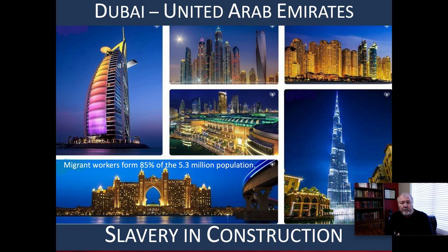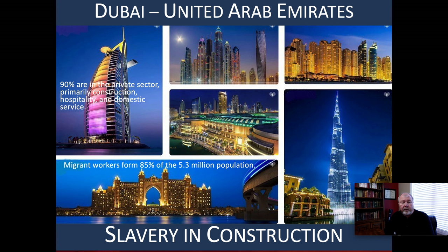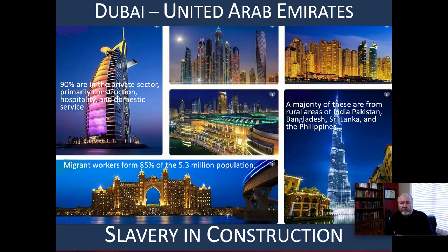90% are in the private sector — that is, they're working in construction, in hospitality, and in domestic service. Each area has its own primary demographic. Construction workers are primarily from India. In hospitality or domestic service, oftentimes you're looking at those from the Philippines. If you're looking at the sex trade, it's primarily those from China. A majority of these 85% of the 5.3 million population — close to 4.5 million people — are from the rural areas of India, Pakistan, Bangladesh, Sri Lanka, and the Philippines.